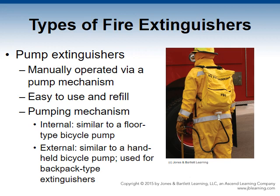Pump extinguishers are manually operated via a pump mechanism, which creates pressure in the tank allowing the water agent to be expelled. These extinguishers are easy to use and refill; the most important factor is keeping water in the tank. They usually have a capacity between 2.5 and 5 gallons. The pumping mechanism may be internal — immersed in the water tank, where each stroke pumps water through the hose — or external, similar to a handheld bicycle pump, common in backpack-type extinguishers used in rural and wilderness areas.